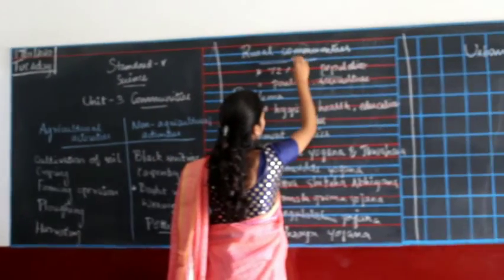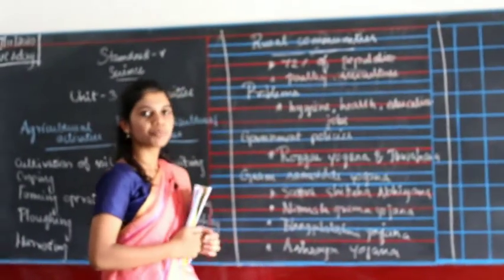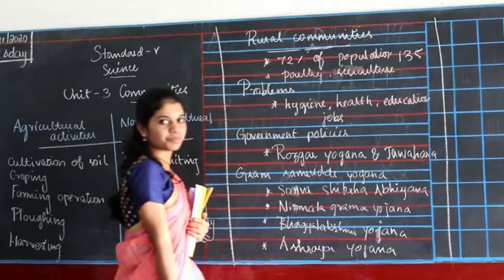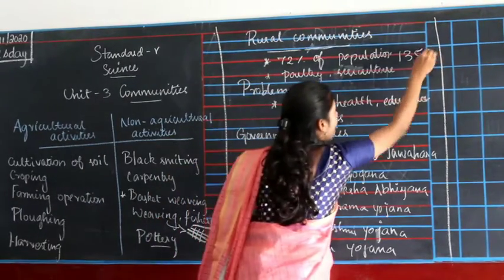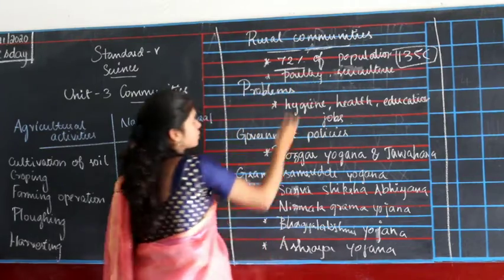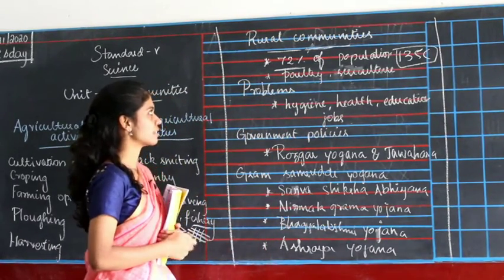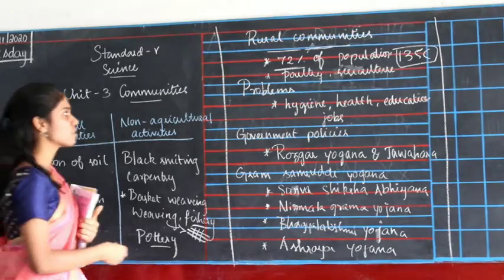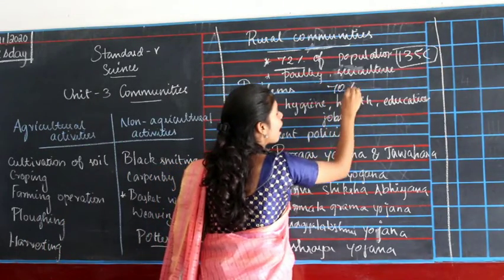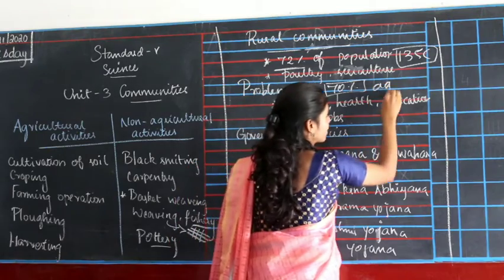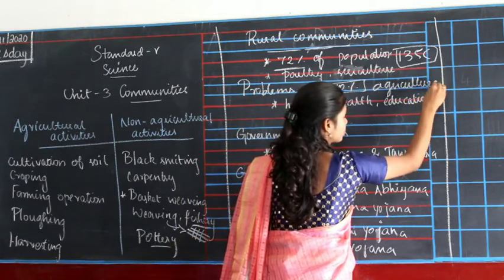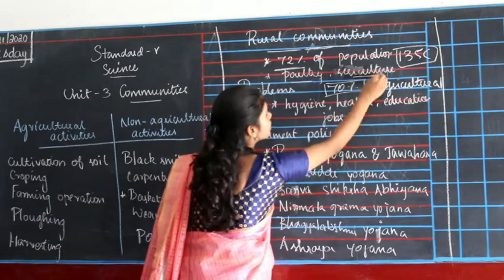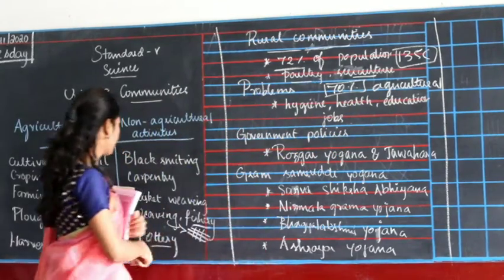So let's learn more about rural communities. In India, there are 135 crore people. Of that population, 72 percent are living in rural communities. The major job they have in rural communities is agricultural activities — about 70 percent of people in villages do agricultural activities. The rest do jobs like pottery, poultry, sericulture, and other such occupations.